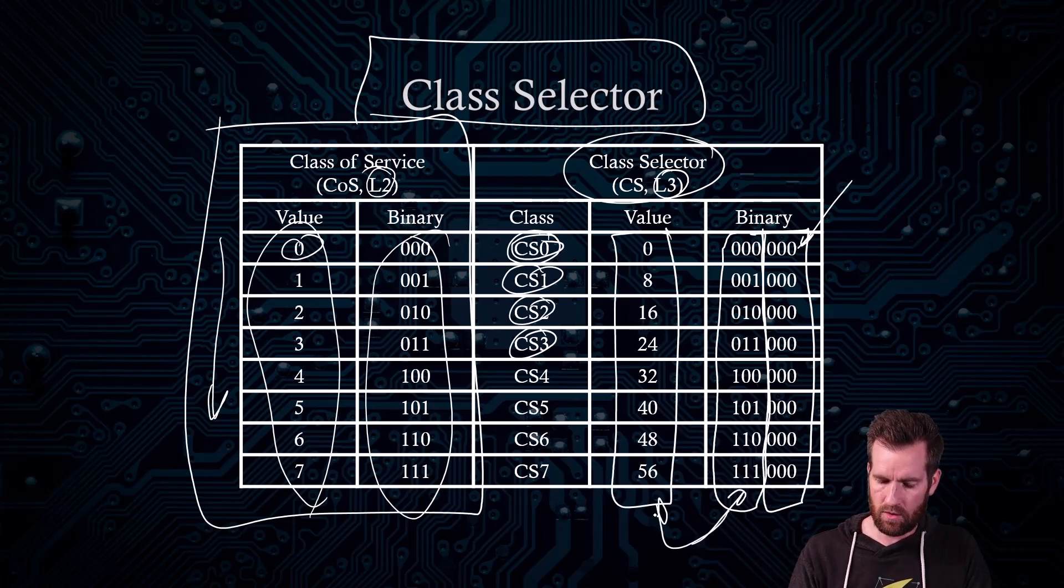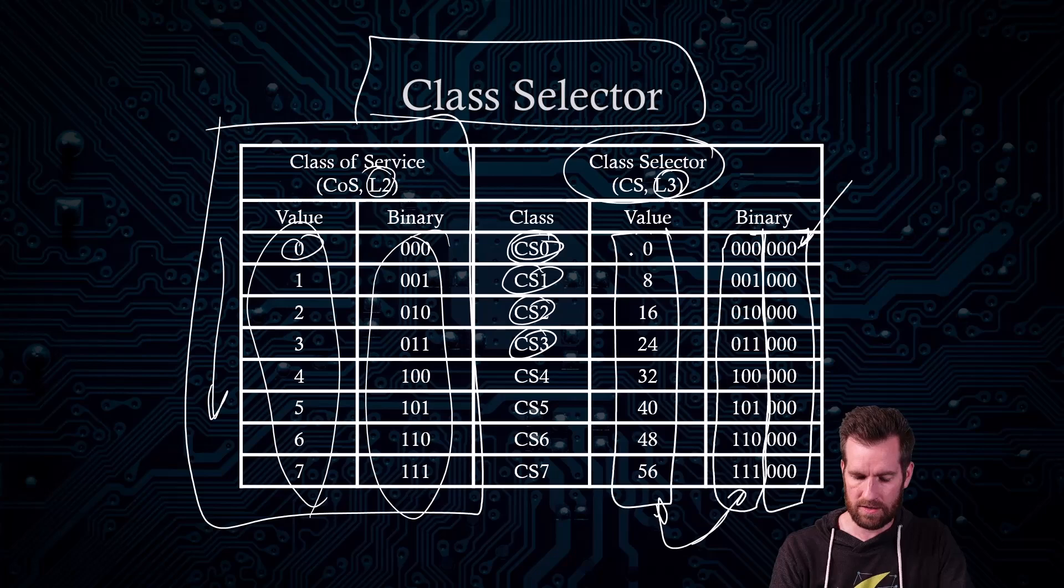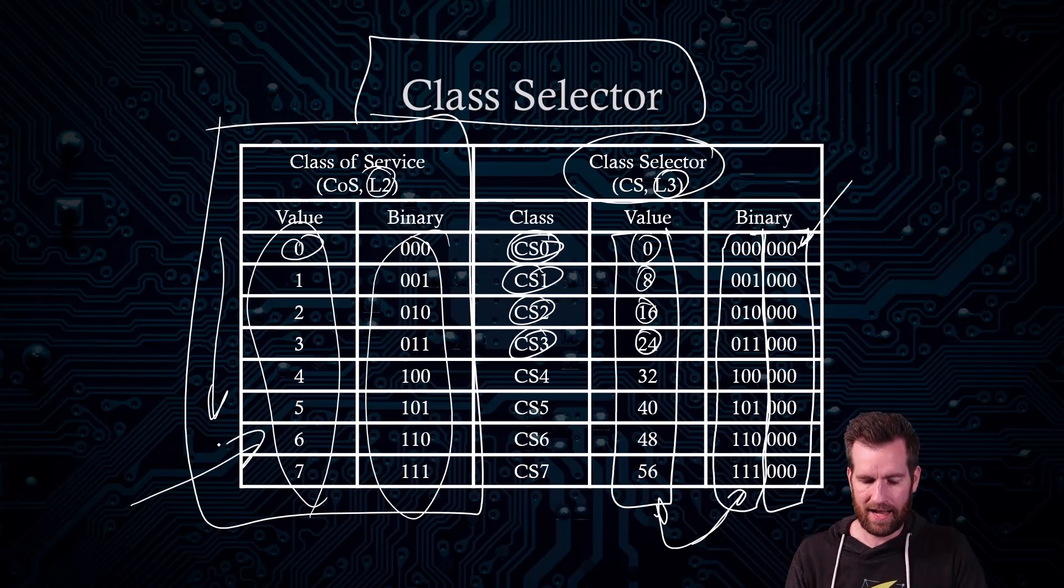But since they are added, it does shift our values a little bit. So if you were to do the binary equivalent of these, then these are the numbers that you would come up with, which is why it goes 0, 8, 16, 24. And it looks a little different than this class of service. But that's the class selector.